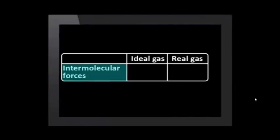Let's start with intermolecular forces between gas molecules. Our simplified ideal gas model says there are none, but real gases do have intermolecular forces. Under most conditions, these are so weak we can ignore them. But under some conditions, these intermolecular forces are strong enough to cause the real gas to behave very differently to an ideal gas.